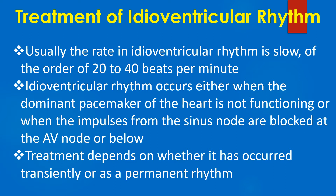Idioventricular rhythm occurs either when the dominant pacemaker of the heart is not functioning, or when the impulses from the sinus node are blocked at the AV node or below. Treatment depends on whether it has occurred transiently or as a permanent rhythm.